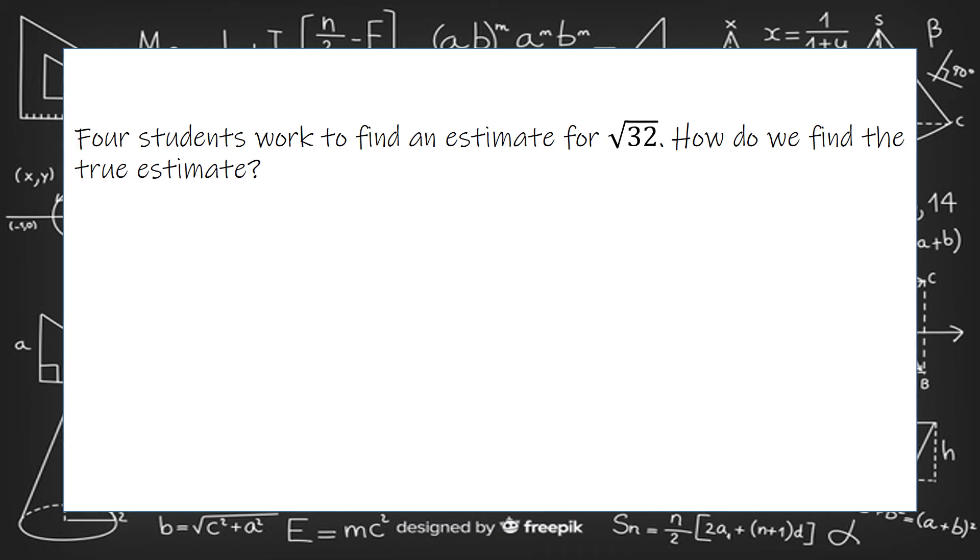Where to find an estimate for the square root of 32? How do we find the true estimate? So you're going to have to look at your perfect squares. Remember you've got 1, 4, 9, 16, 25, 36, 49. Well 32 is right here in between 25 and 36. So I'm going to say it's between 5 and 6.